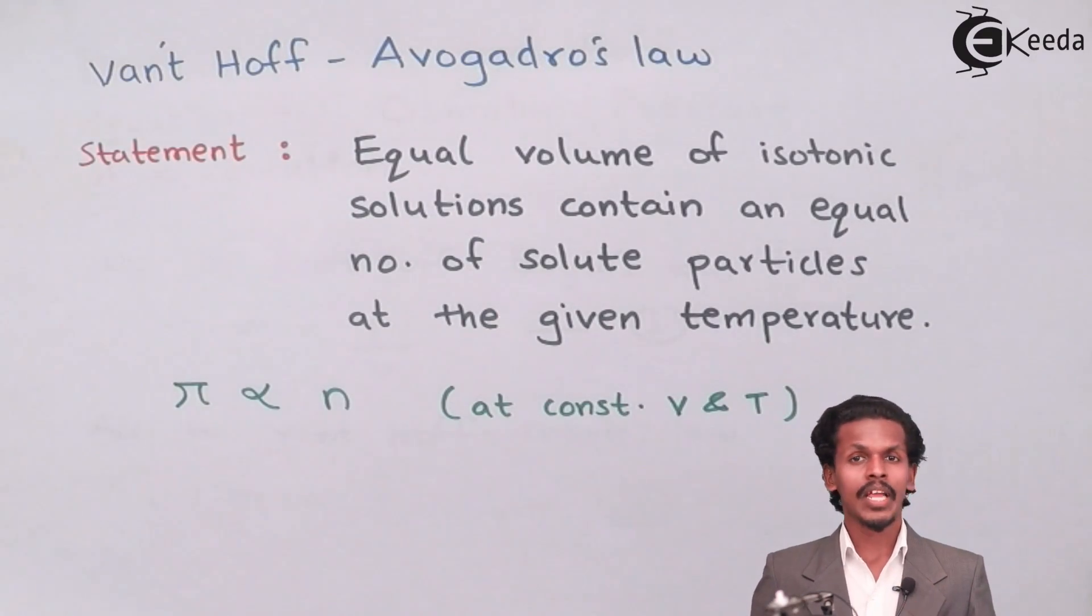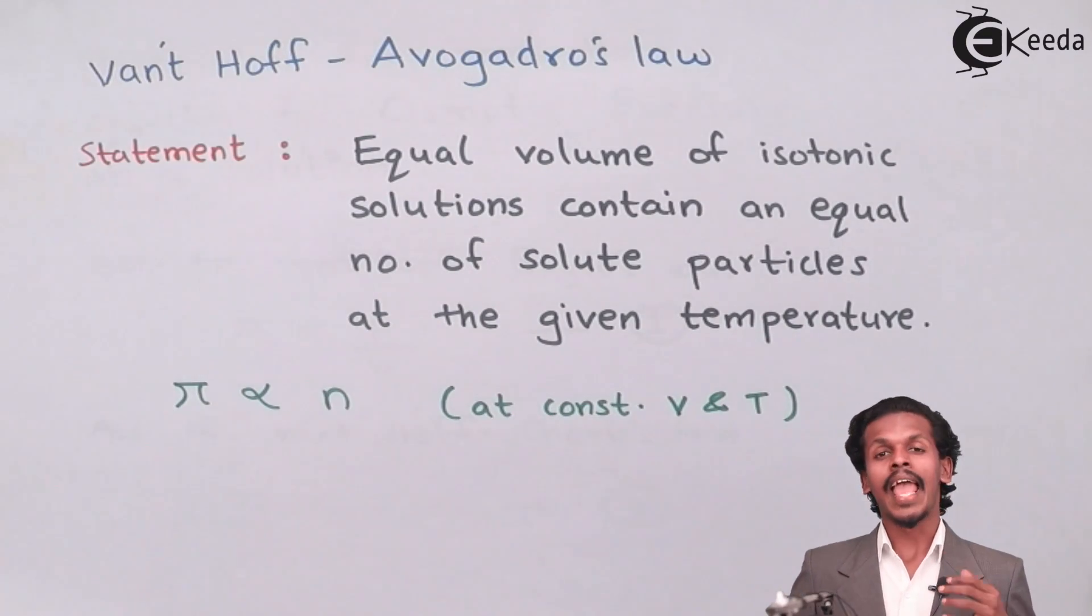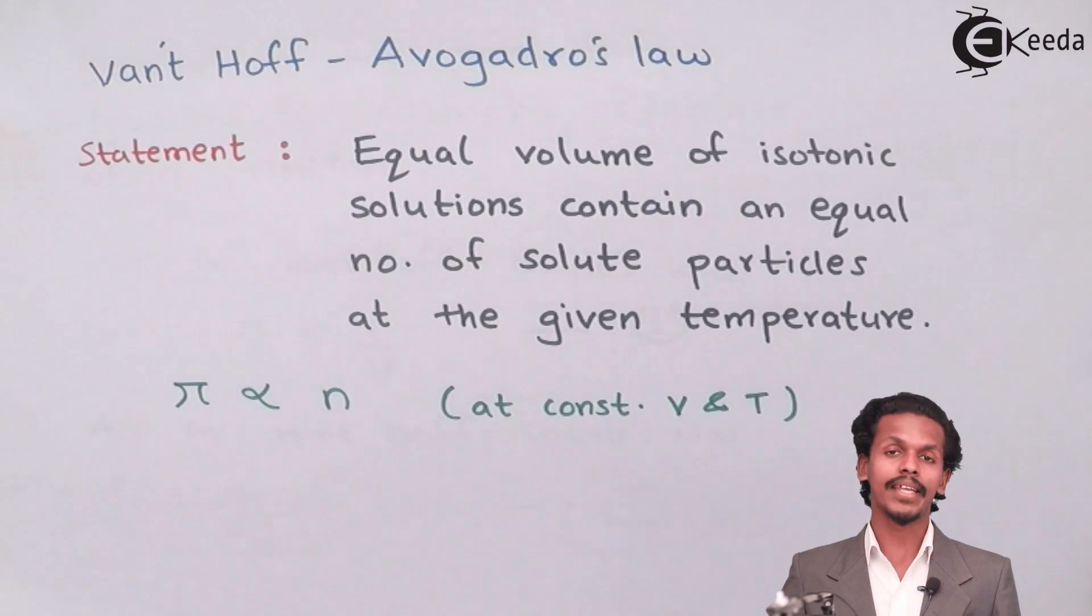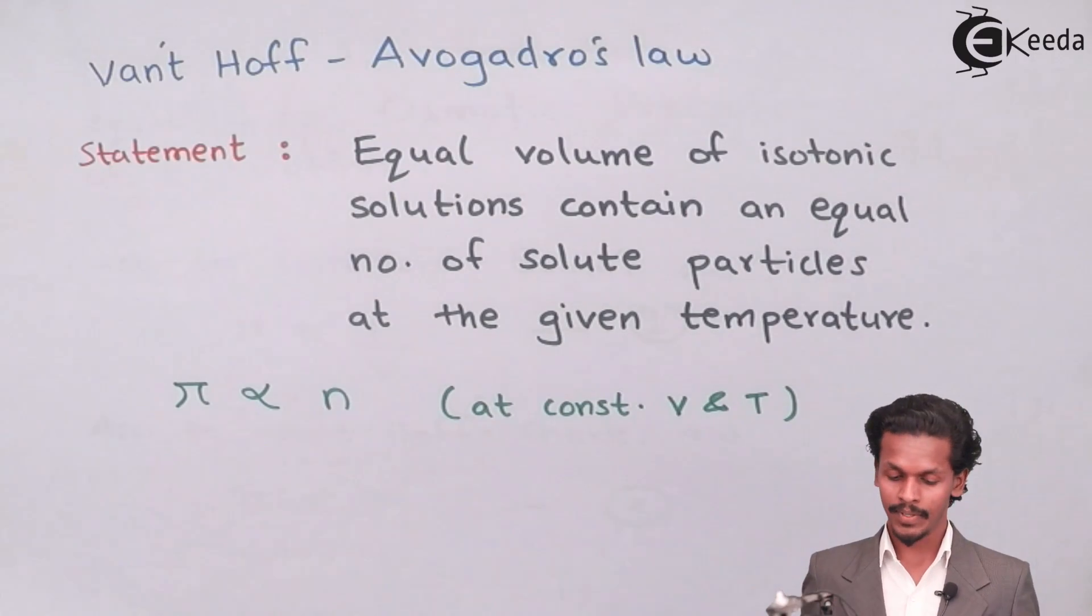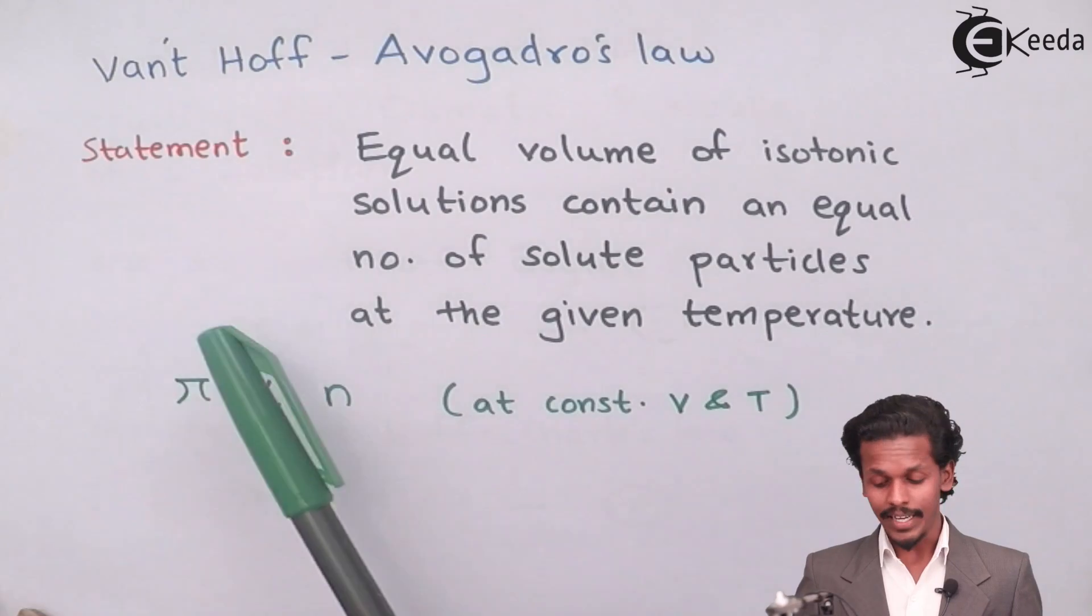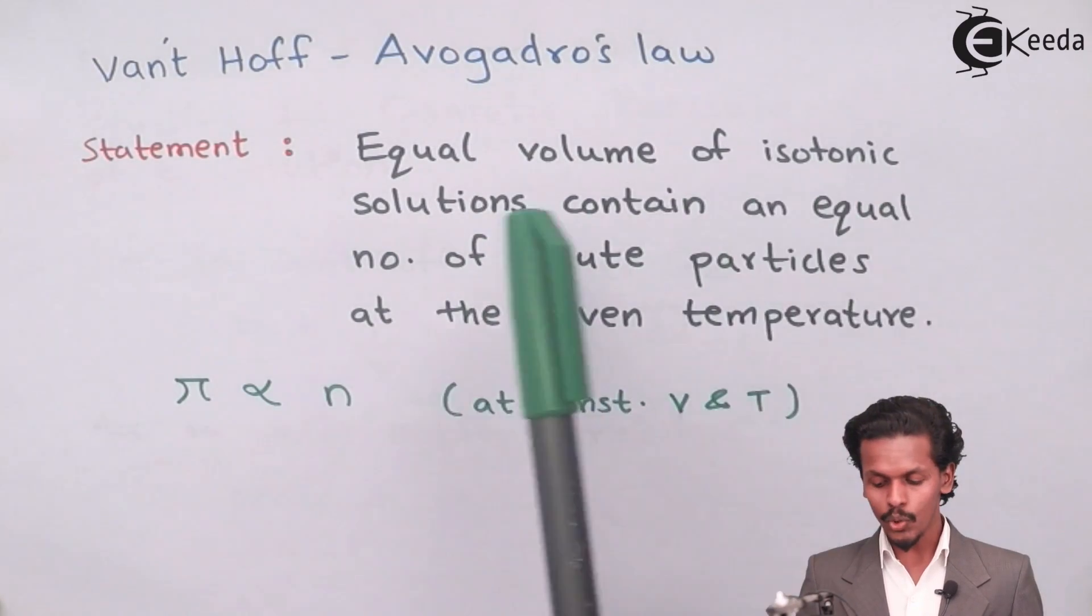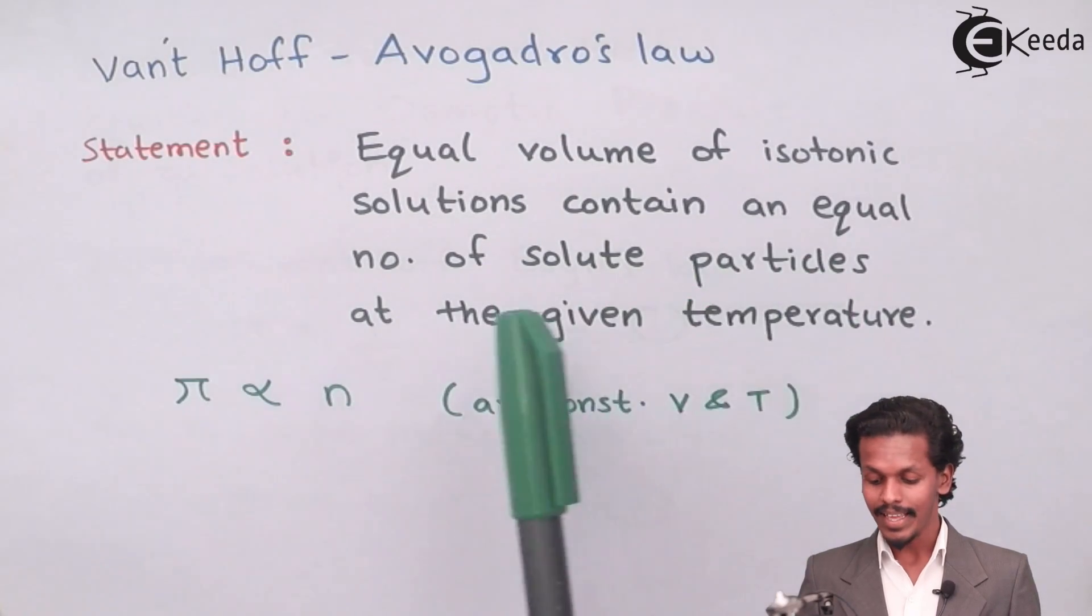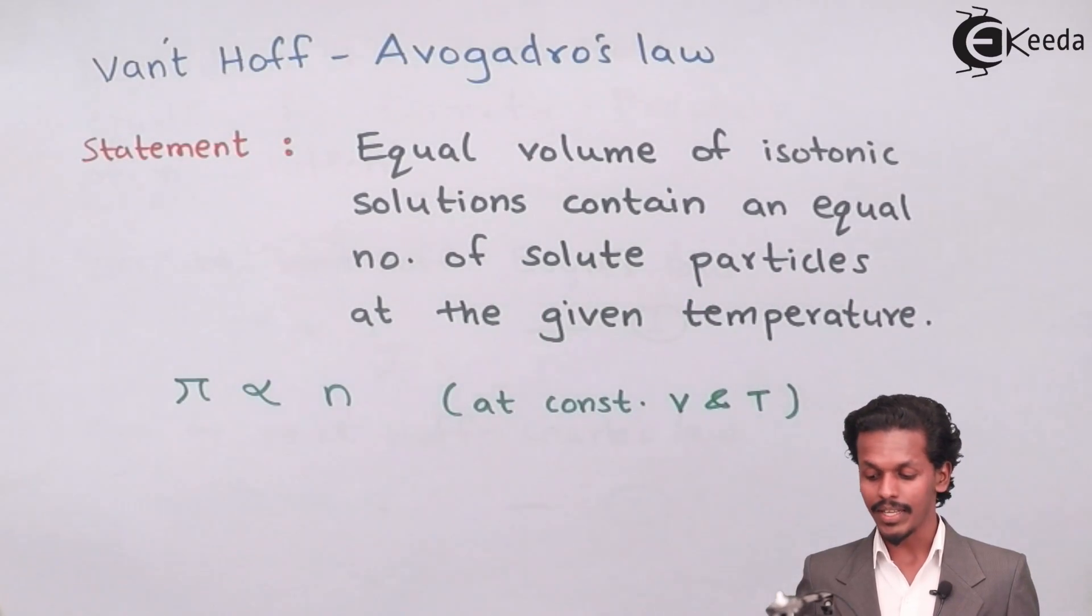And ultimately, van't Hoff-Avogadro's law deals with the number of moles of particle which are present and we have to analyze how it is related to osmotic pressure. It states that equal volume of isotonic solutions contains an equal number of solute particles at the given temperature.